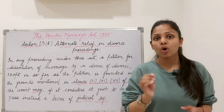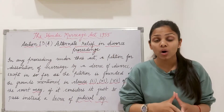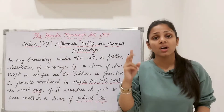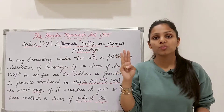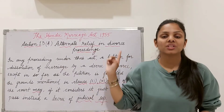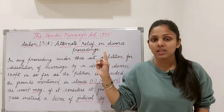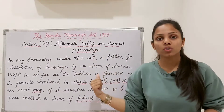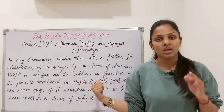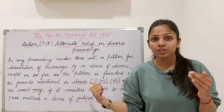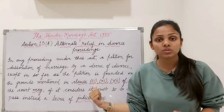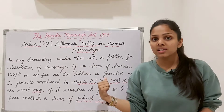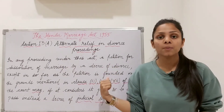But if someone has an original divorce petition filed on the ground of conversion of religion, renunciation, or presumption of death — in these three situations — the court cannot grant judicial separation instead of divorce. If you have filed for divorce on these grounds, you will get a divorce and not a judicial separation. These three exceptions relate to Section 13, clause 2 — which deals with change of religion — clause 6, which deals with renunciation of the world, and clause 7 of Section 13, which deals with presumption of death.